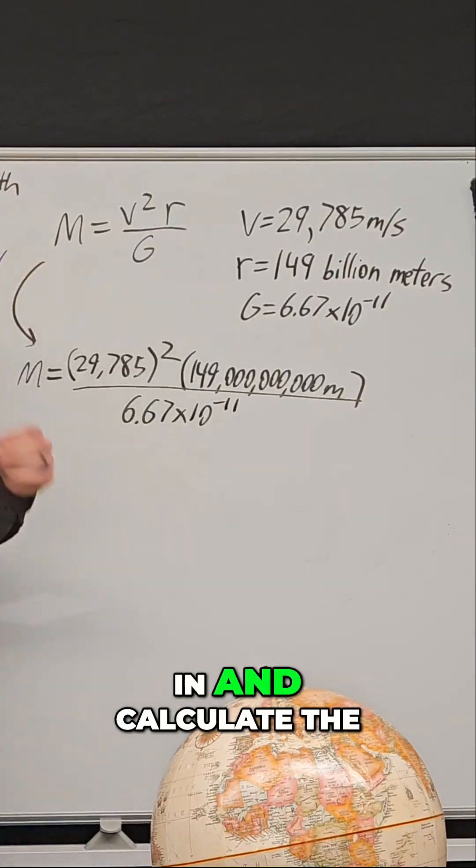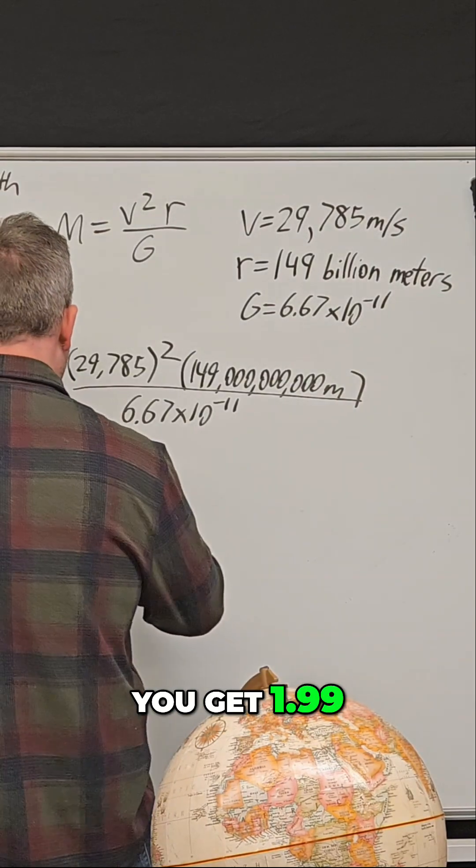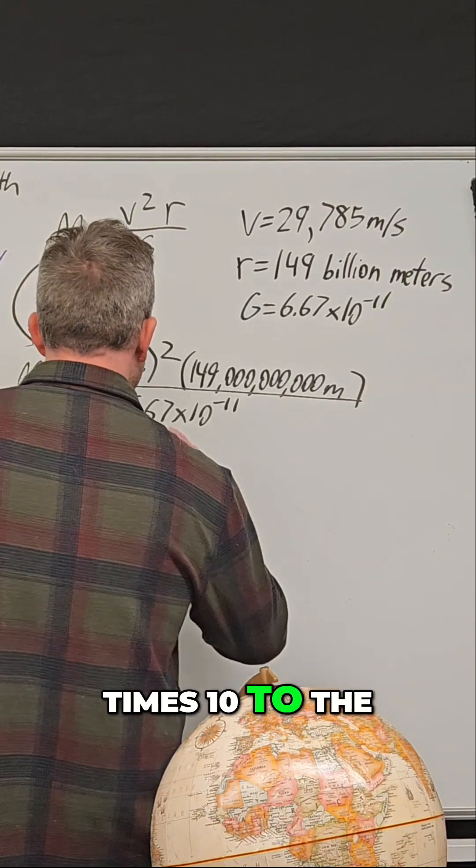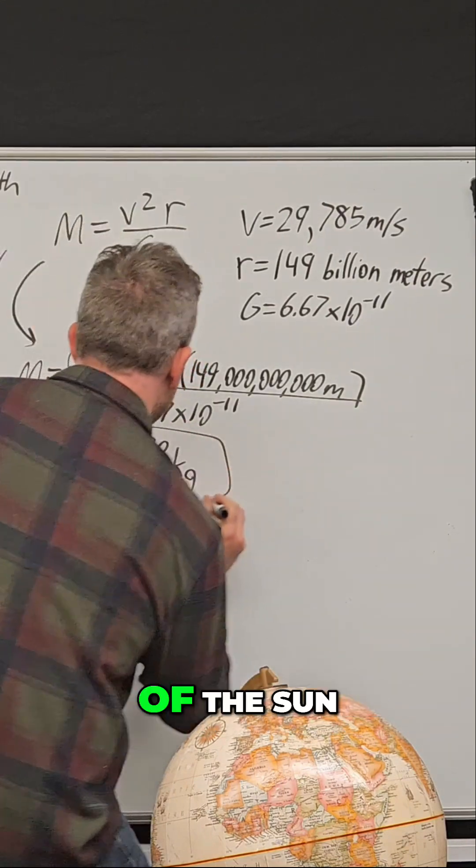And so when you plug all of that in and calculate the mass of the sun, you get 1.99 times 10 to the 30th power kilograms. This is the mass of the sun.